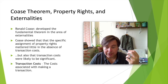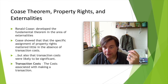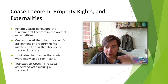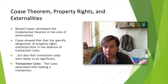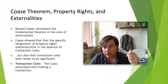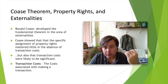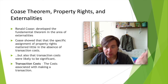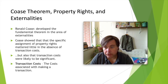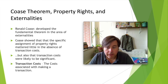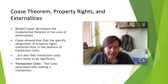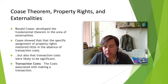Coase takes the case of a rancher alongside a river. The rancher allows his cattle to graze, and it causes a certain amount of damage to the river, which then flows downstream affecting another party. The question asked is: who should clean up the river? The answer most of us would give is that the rancher should clean it up because they did the damage.